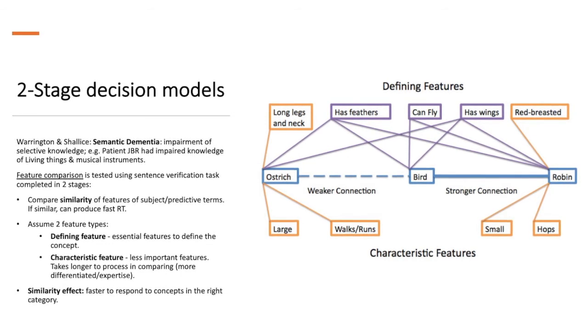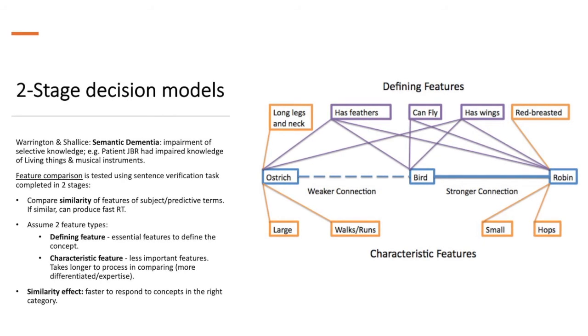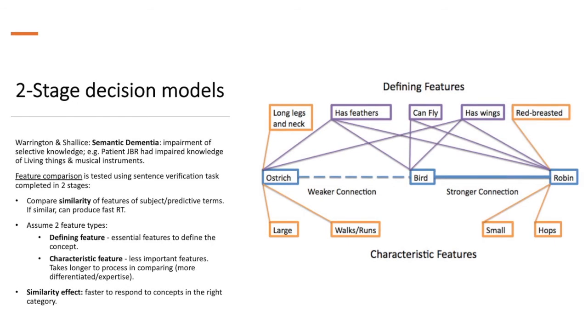It was also found that there were similarity effects, whereby it was faster to respond to concepts in the right categories. So in this model, for example, I have birds,